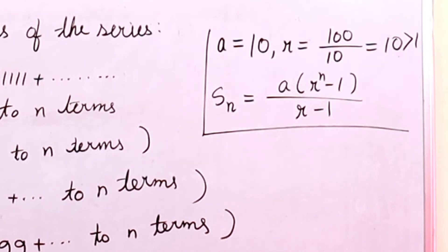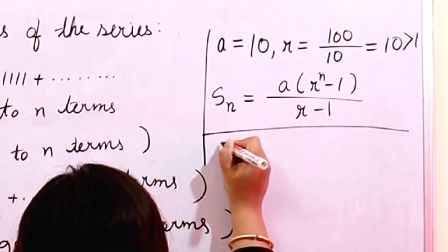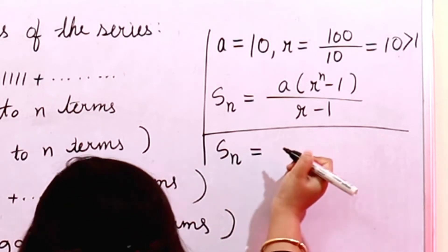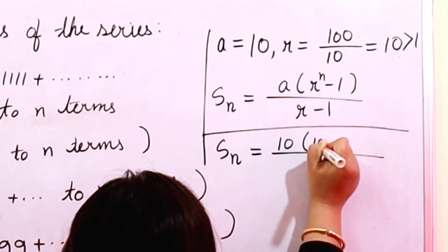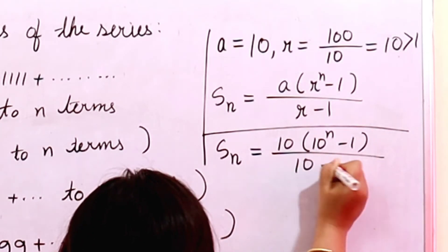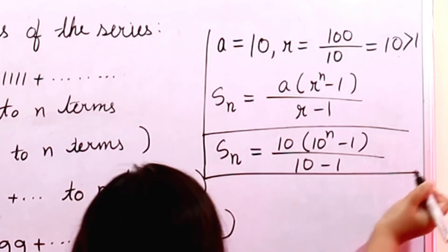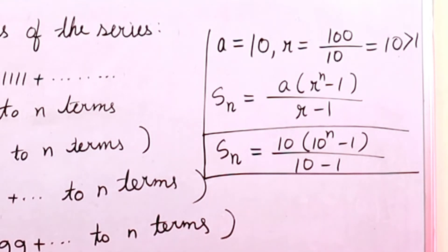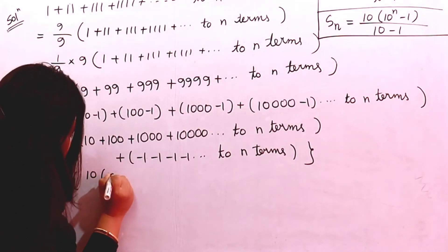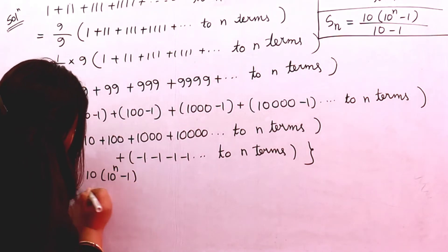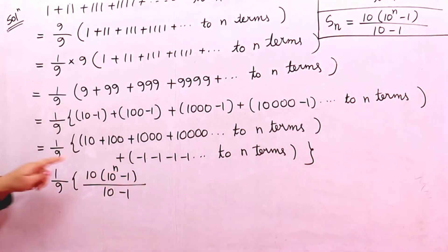Now in this case, a = 10 and r = 10. According to the formula, this value will be 10 × (10^n − 1) / (10 − 1). So we replace the values: 1/9 multiplied by [10 × (10^n − 1) / (10 − 1)], which simplifies to 10 × (10^n − 1) / 9.